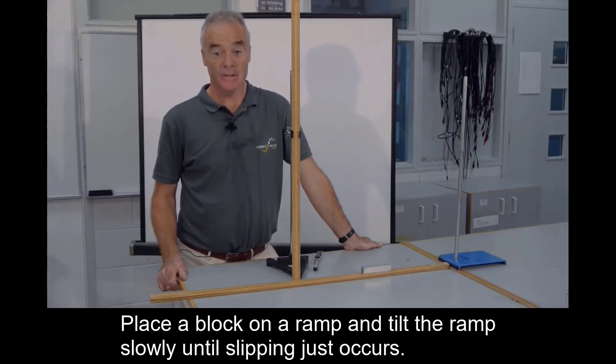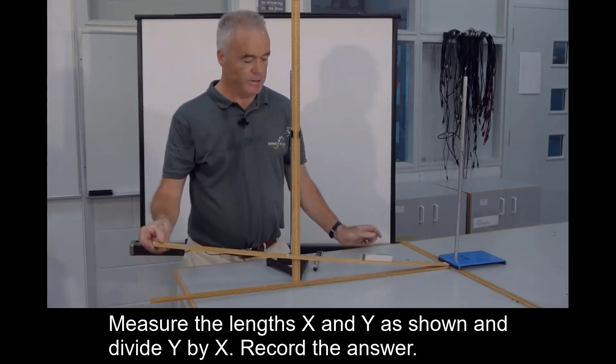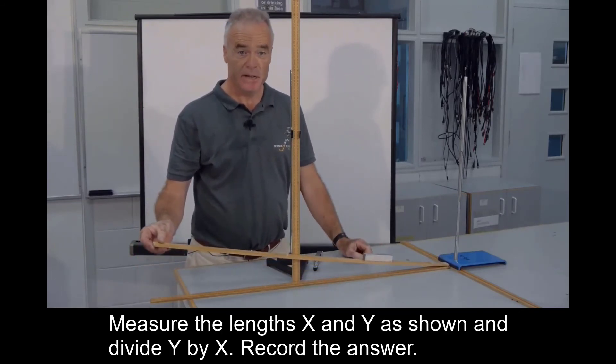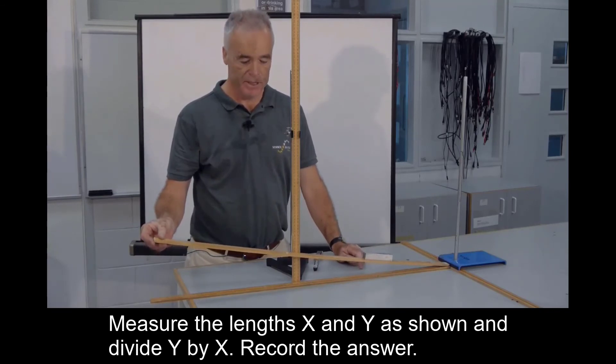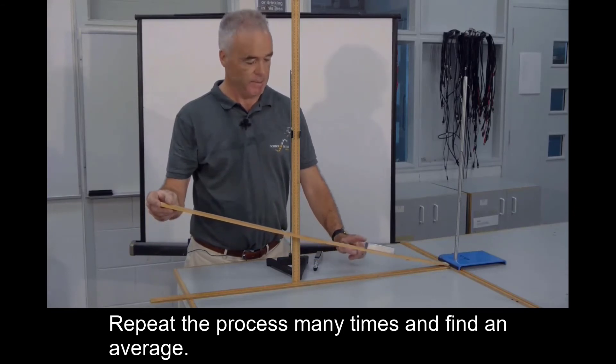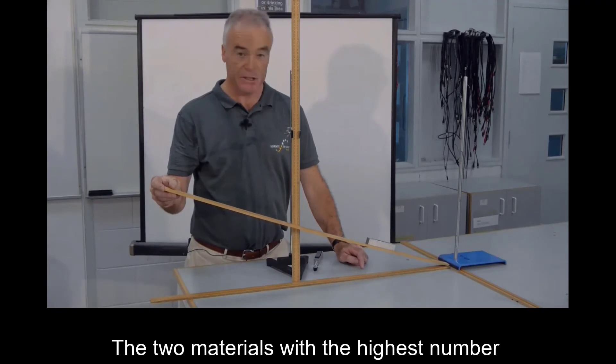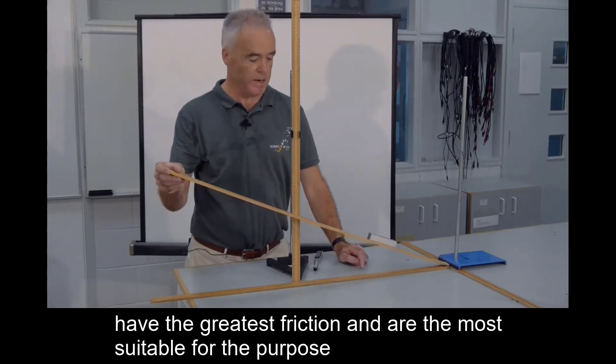Place a block on a ramp and tilt the ramp slowly until slipping just occurs. Measure the lengths x and y as shown and divide y by x and record your answer. Repeat the process many times and find an average. The two materials with the highest number have the greatest friction and are the most suitable for the purpose.